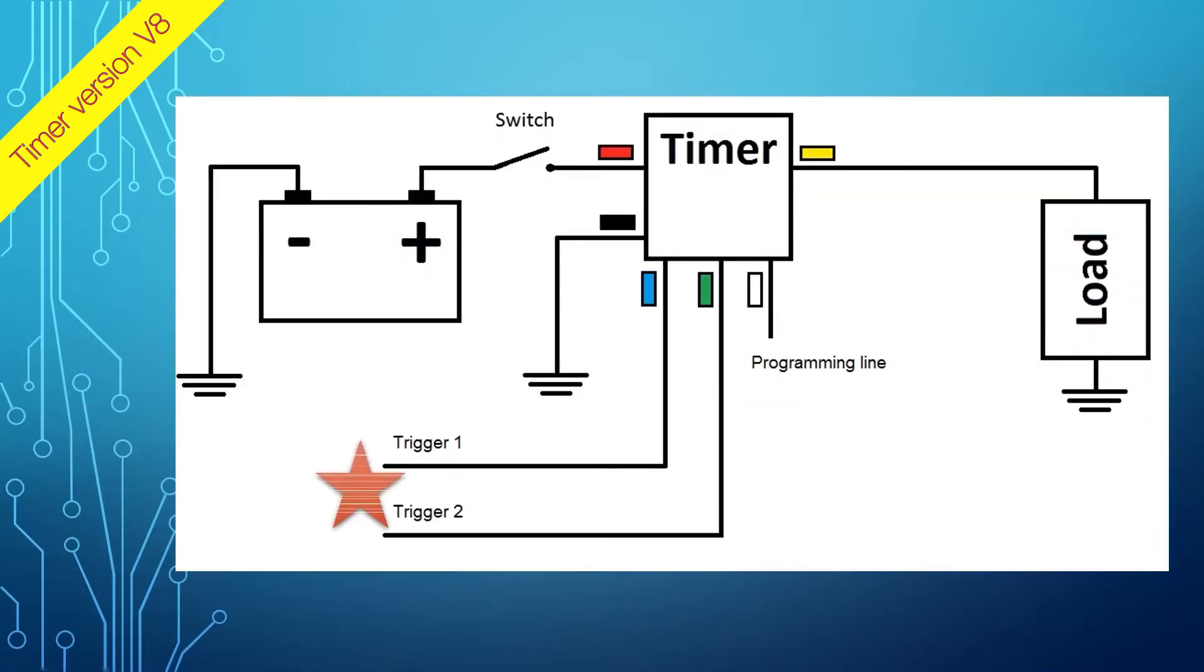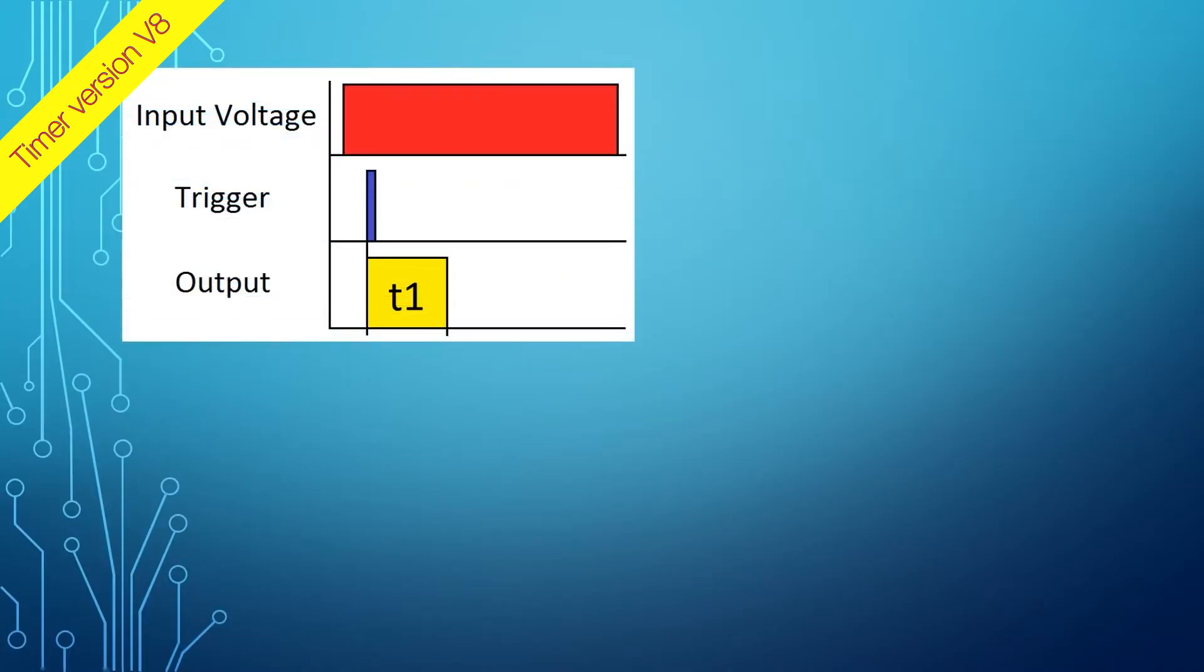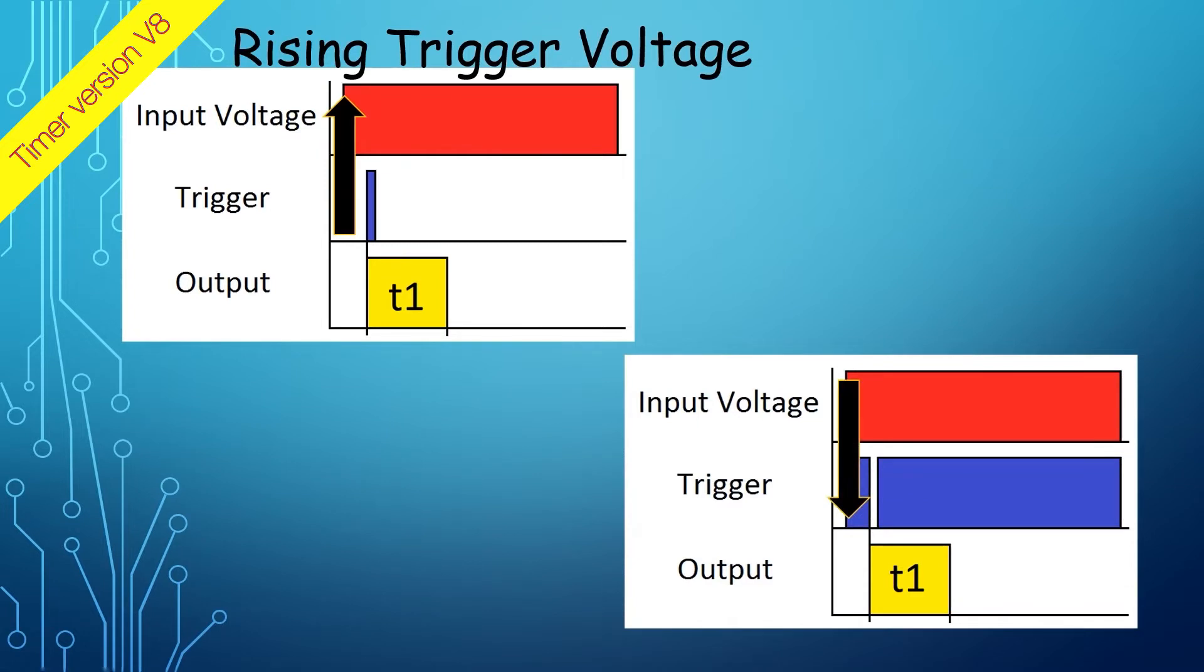The multifunctional timer has trigger inputs that can be used to activate or deactivate functions based on external trigger. The rising or falling voltage levels can be used to control the execution of the function. In simple terms, the trigger can sense the presence of voltage or ground to control the timer's functionality.